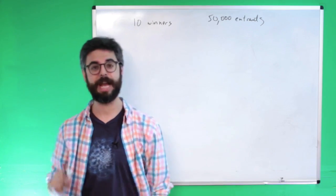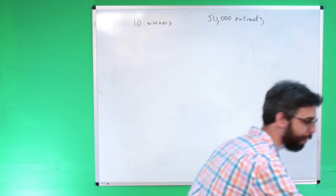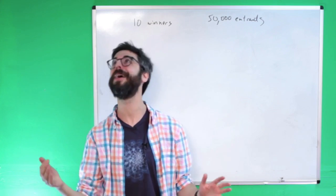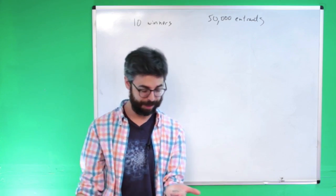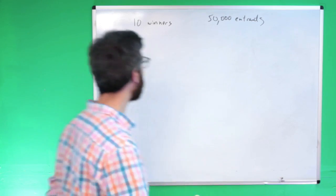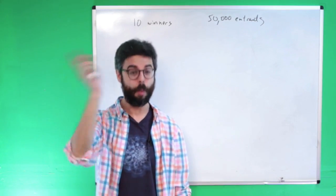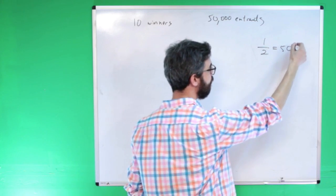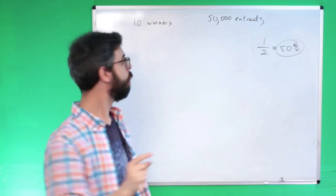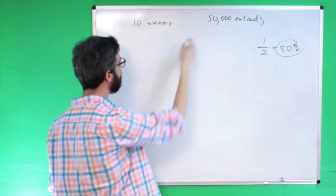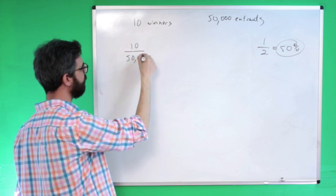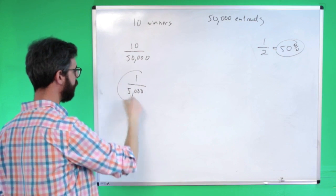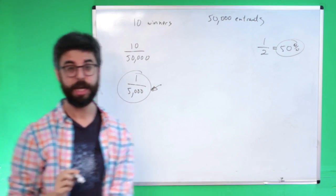So we have 10 winners and 50,000 entrants. If I have a coin and I flip it, there's a one out of two chance of it being heads, because there are two possible outcomes — heads or tails — meaning a 50% chance. So if there are 10 winners out of 50,000, that means there is a one out of 5,000 chance of winning this particular lottery.